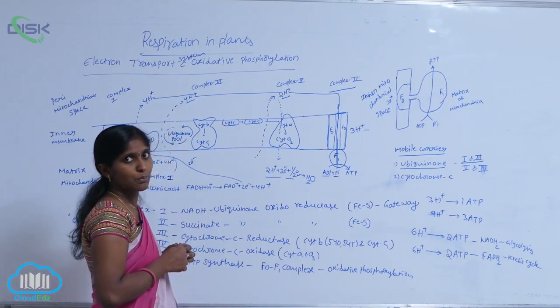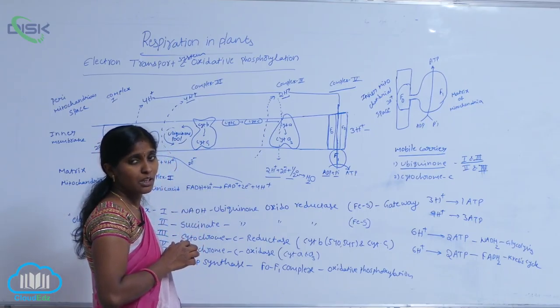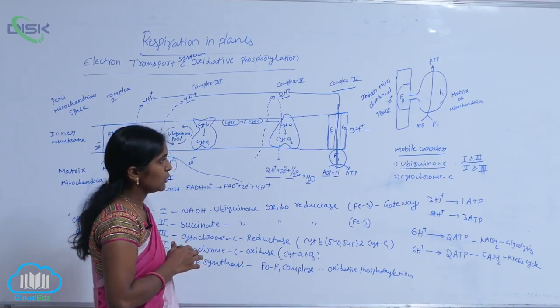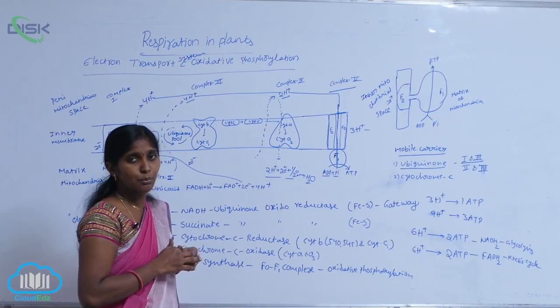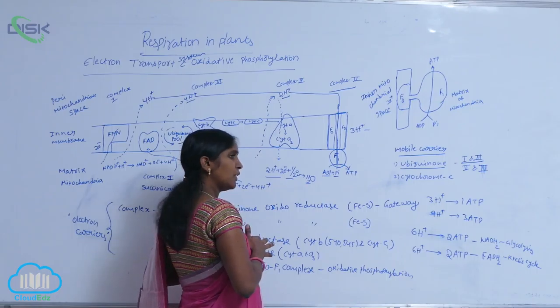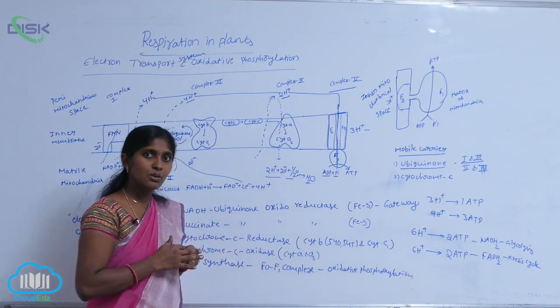when three H+ protons are transmitted through F0 to F1 granules, there is production of ATP. The F1 granules are rotatory granules that rotate very rapidly.